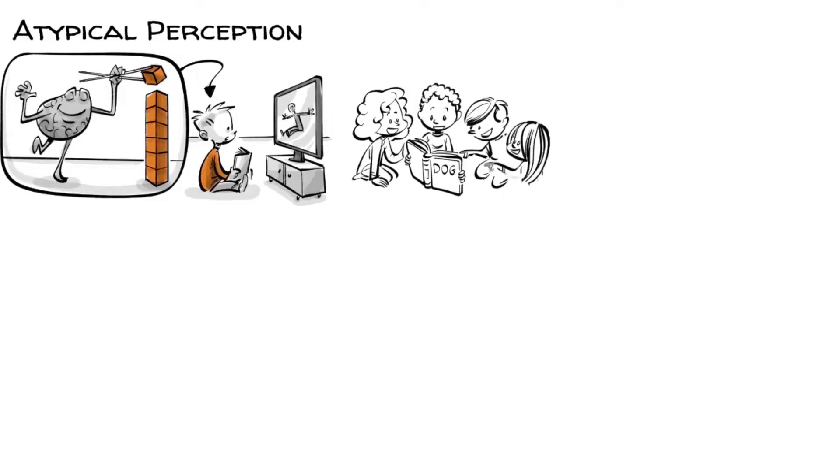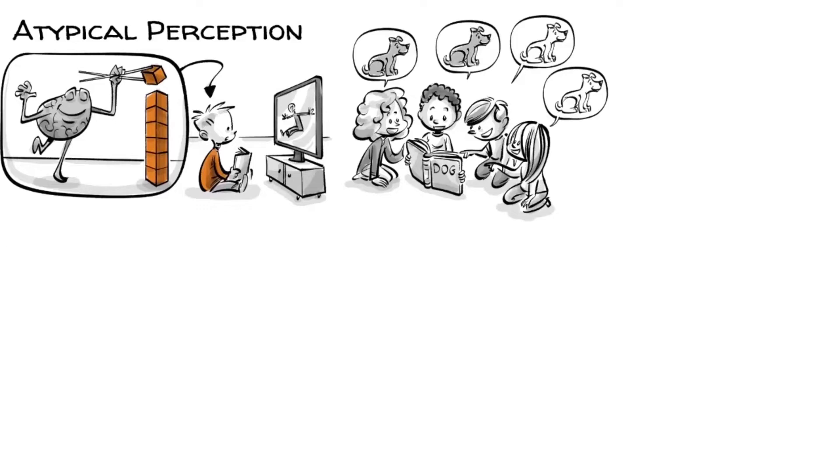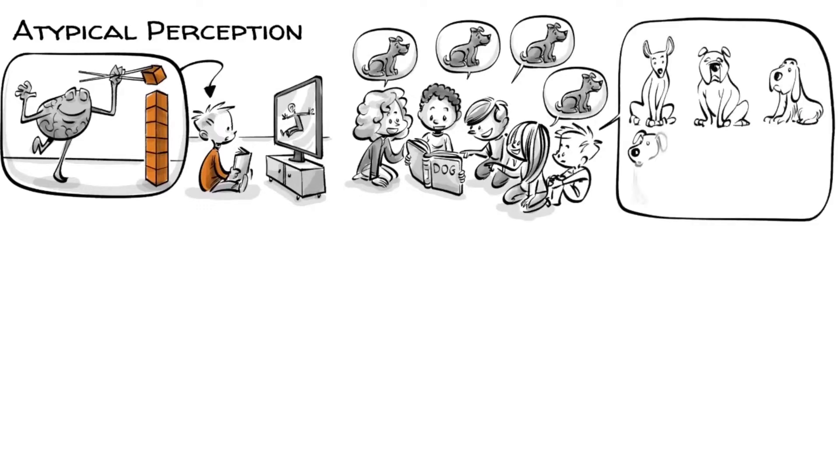While his neurotypical peers categorize things and form schemas, for example, they identify everything with four legs that barks as a dog, for Timo each type of dog is unique and categorized in Timo's mind individually.